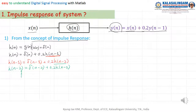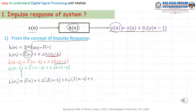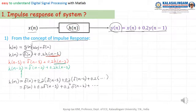From here, h of n means delta of n plus 0.2 times h(n minus 2), which means delta(n minus 1) plus 0.2 h(n minus 2), delta(n minus 1) plus 0.2 h(n minus 2), and so on. This is the equation of the impulse response.